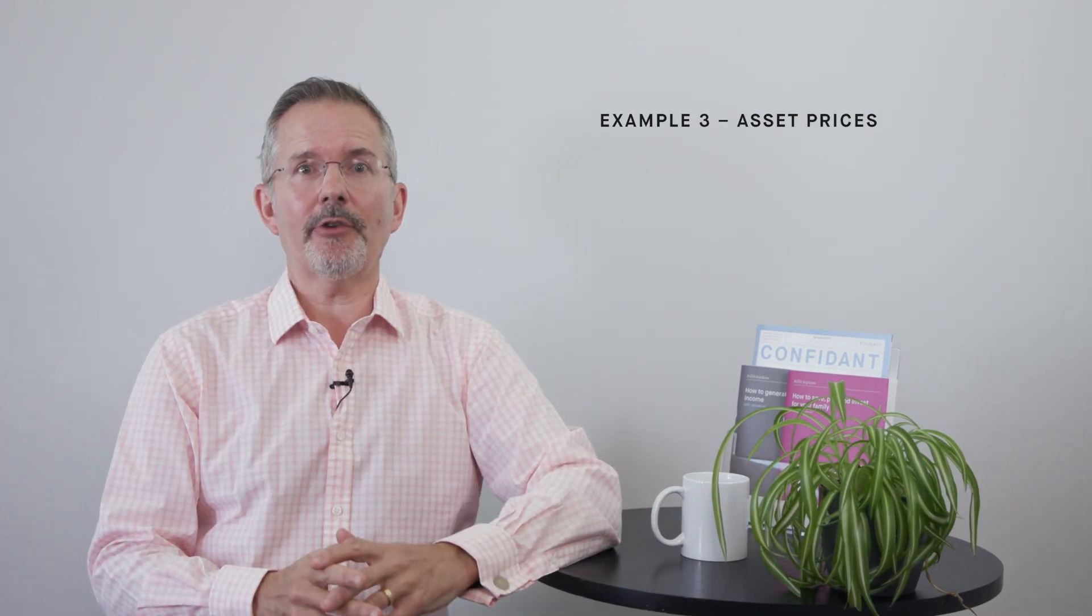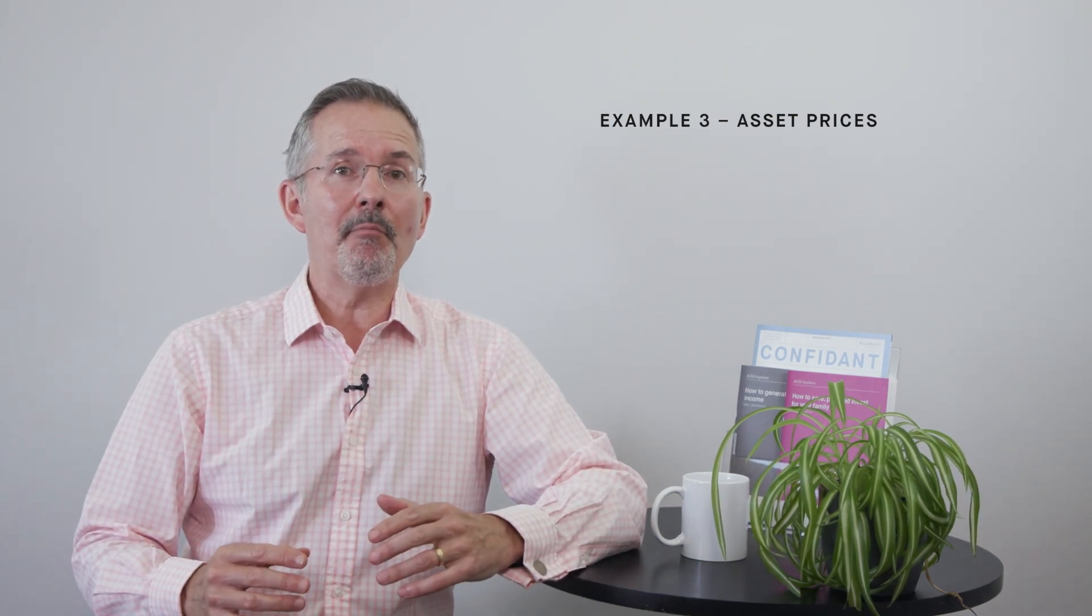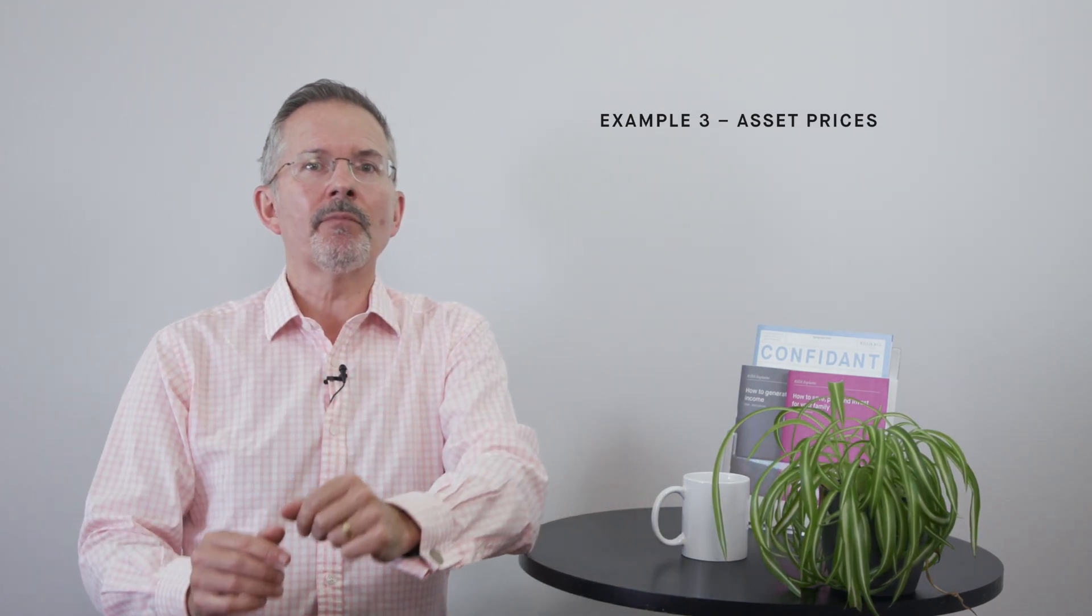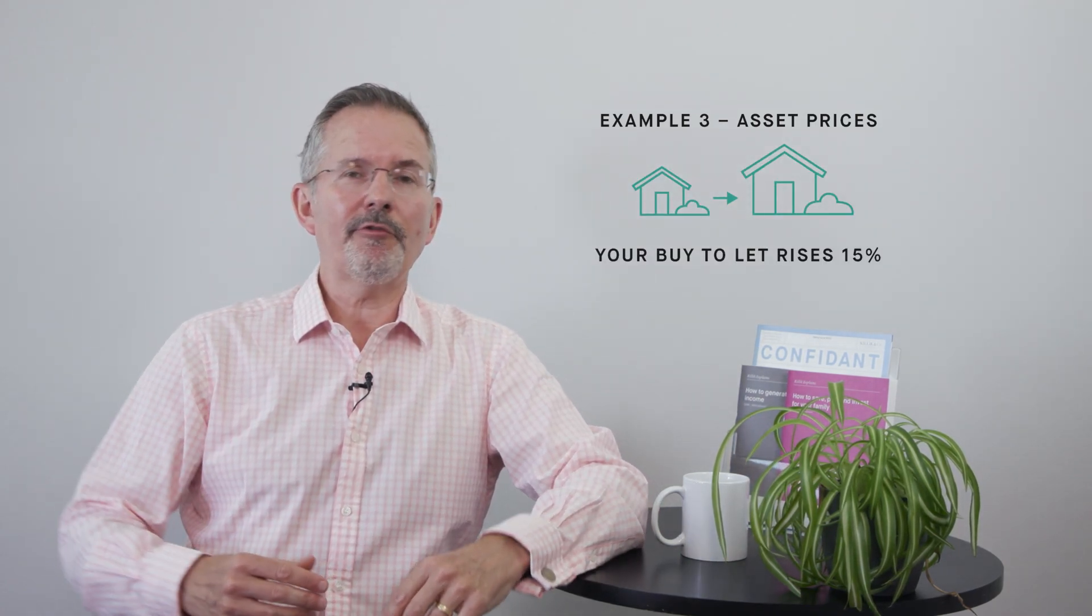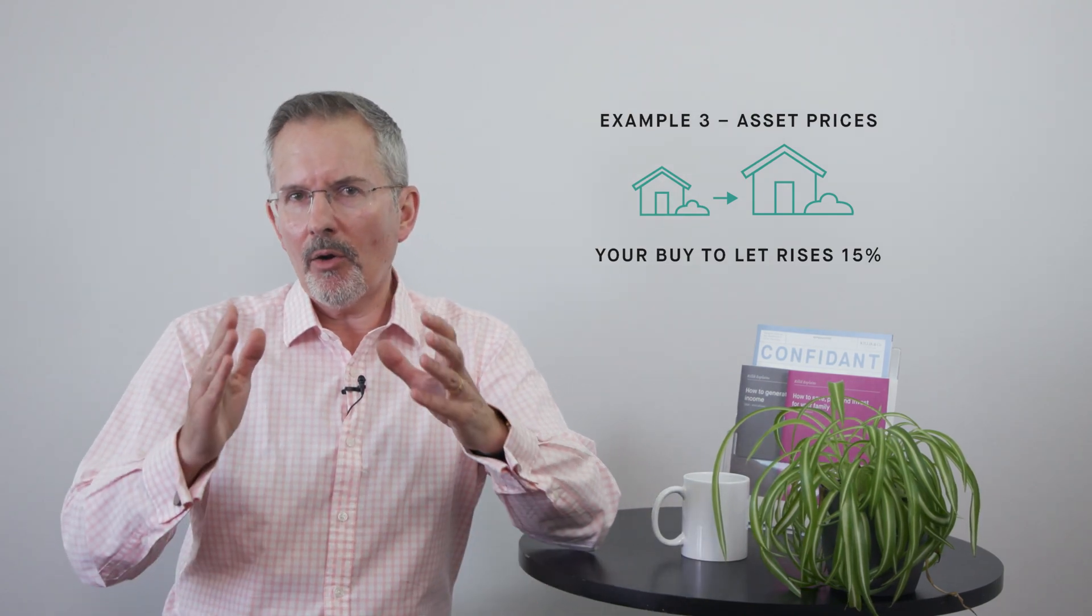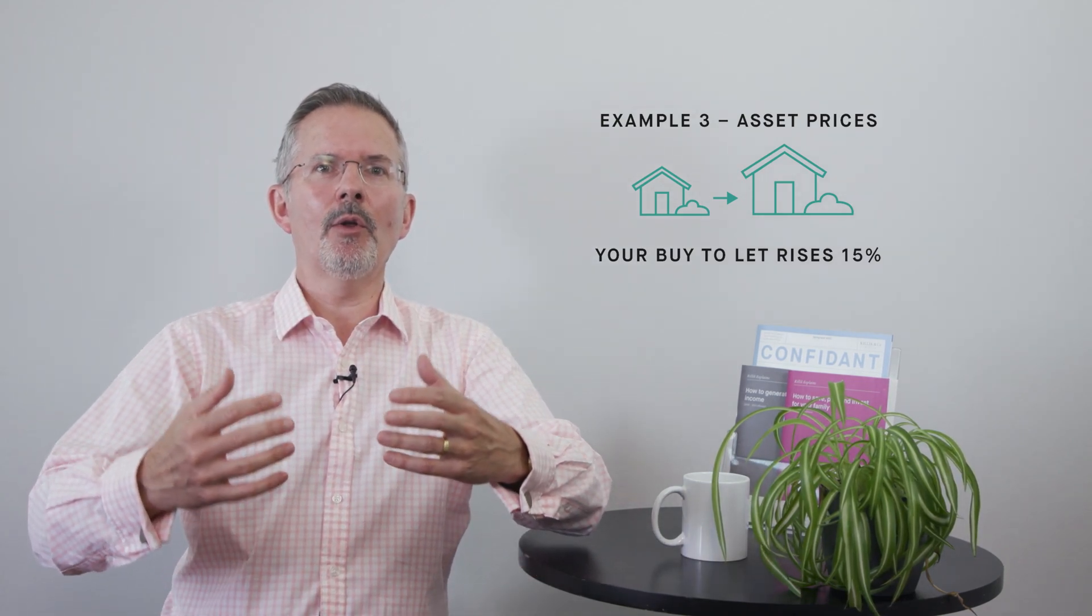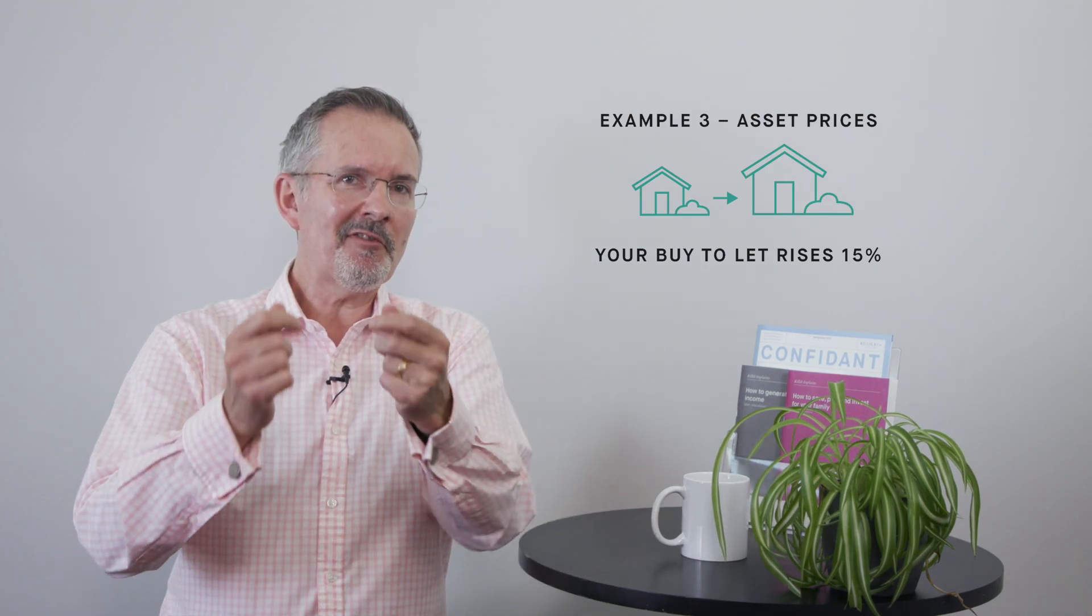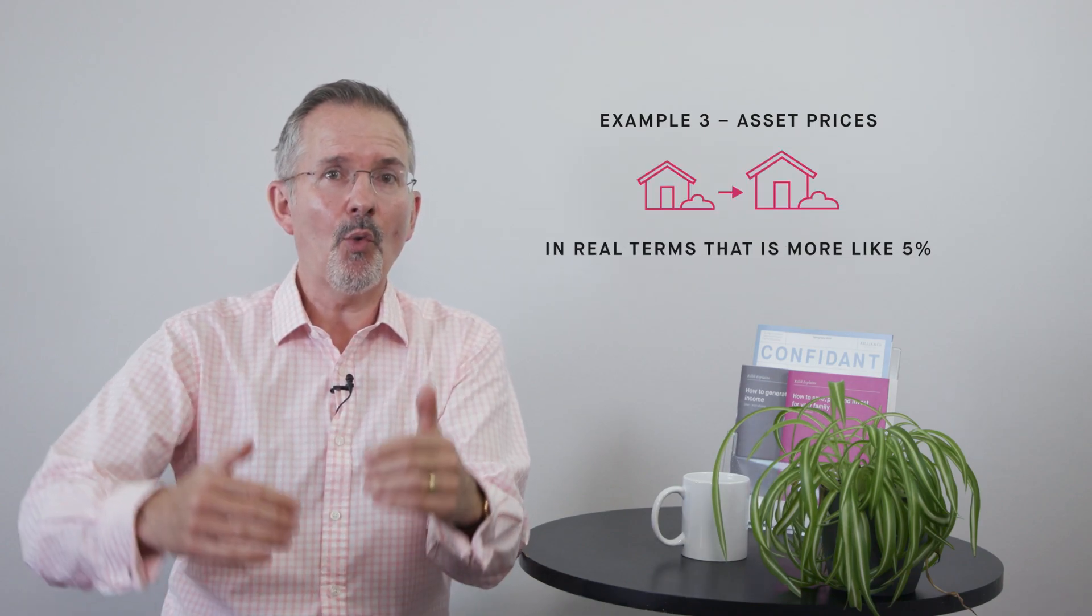Next: asset price increases. Some people watching may have money in buy-to-let property, for example. Let's say you've been used to your buy-to-let rising at 15%—an aggressive number. When inflation is low, that sounds fantastic. You could liquidate the property and make your 15% return.